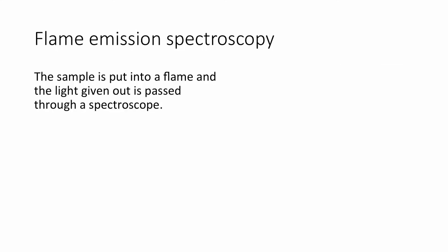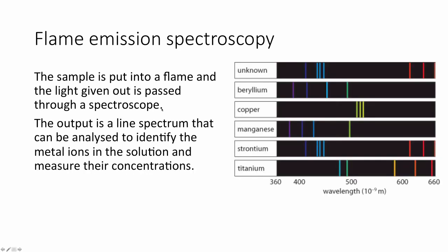Flame emission spectroscopy. In flame emission spectroscopy, a sample is put into a flame. And the light given out is passed through a spectroscope. Very similar to a flame test, but we analyse the light in a little bit more accuracy. It's much more sensitive and quicker. The output of the spectroscopy is a line spectrum which can be analysed to identify the metal ions in solution and measure their concentrations.